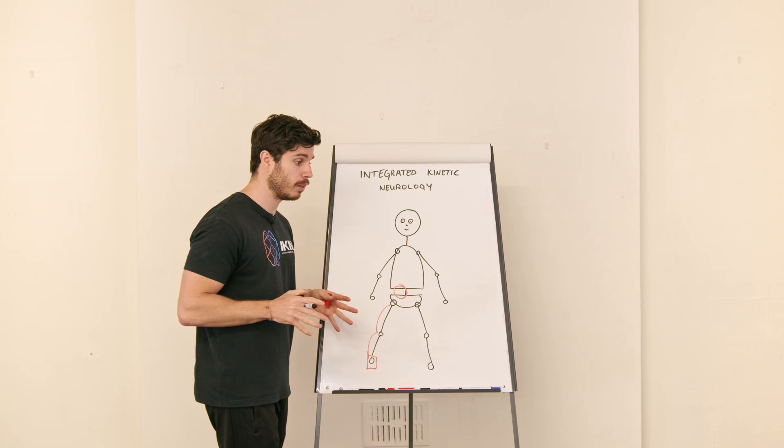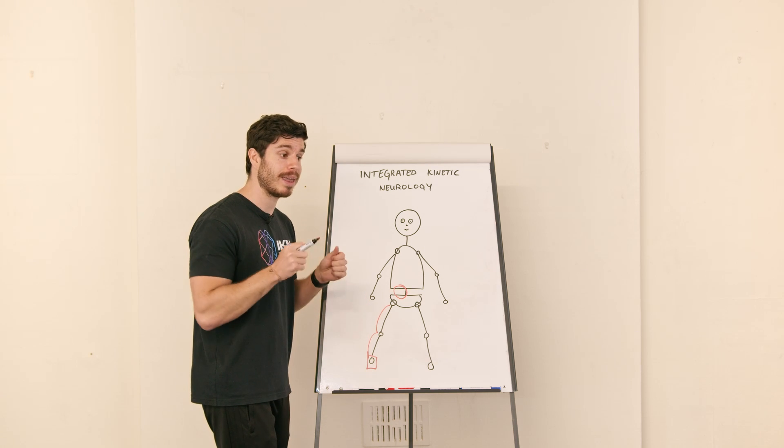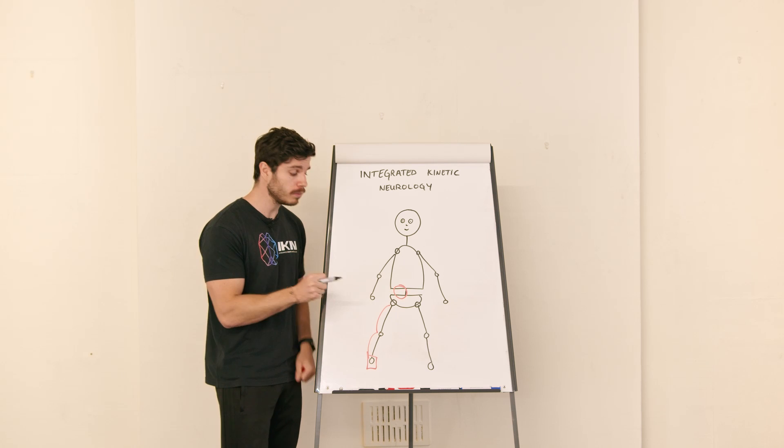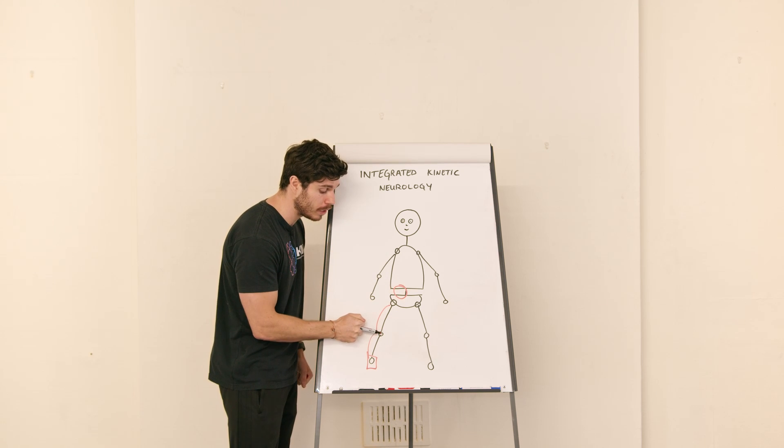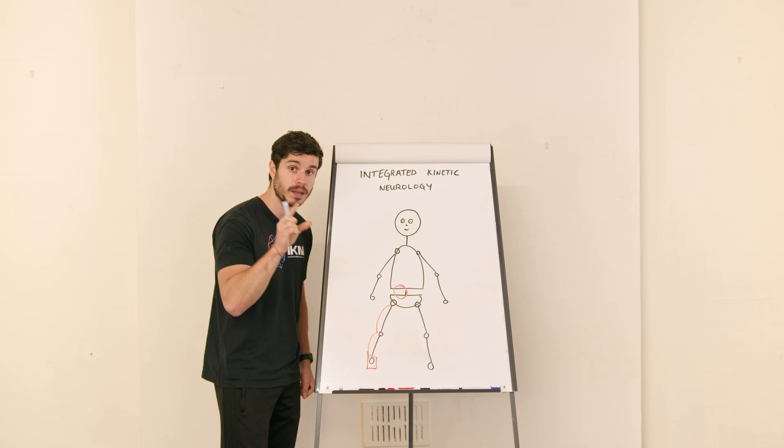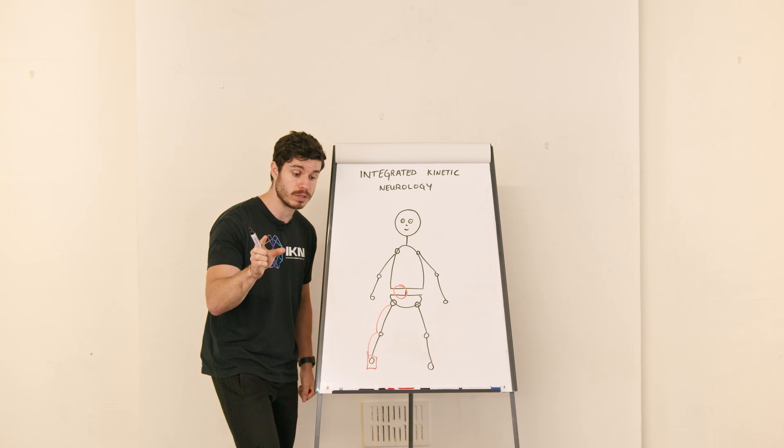Perhaps when we're walking, the lower back might have to tighten up and express what we call more of a trunk-stiffening strategy. But that trunk-stiffening strategy may be because the lower limb has lost the ability to maintain its ability to handle stress once it hits the ground.